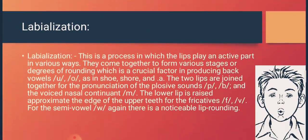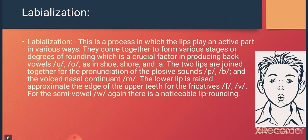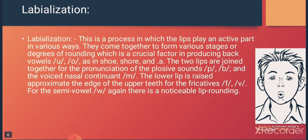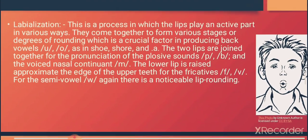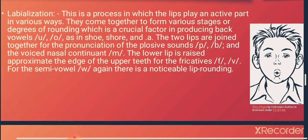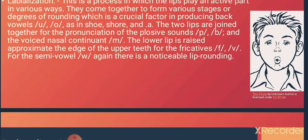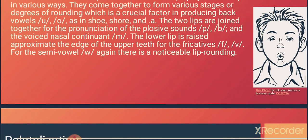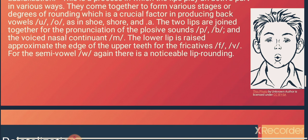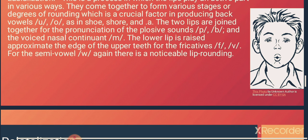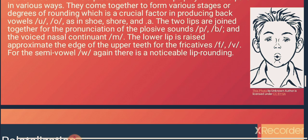Labialization is the process in which the lips play an active part — they come together to form various stages or degrees of rounding, which is very important in producing back vowels. For example, 'u' as in 'shoe' and 'o' as in 'show'. The two lips are also joined together for the pronunciation of plosive sounds like 'p' and 'b', and the nasal sound 'm'.